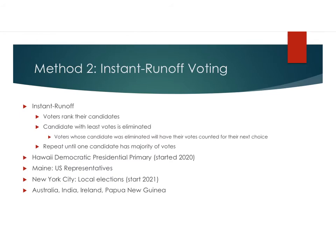The second voting system is called Instant Runoff Voting, which is where voters rank their candidates and the candidate with the least amount of votes is eliminated. But if your candidate was eliminated, we're still going to count your votes for your next choice, and we repeat this until we have a majority of votes for one candidate. If you have five candidates, the fifth place candidate gets eliminated, then everyone who chose them gets their next choice counted, and we keep eliminating until we have a winner. This was used recently in the Hawaii Democratic Presidential Primary, and it's also used in Maine and New York City, as well as several other countries.